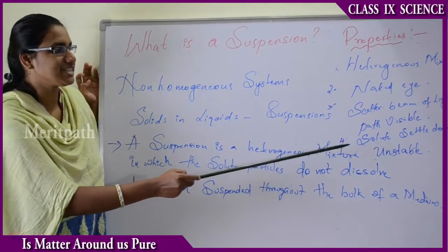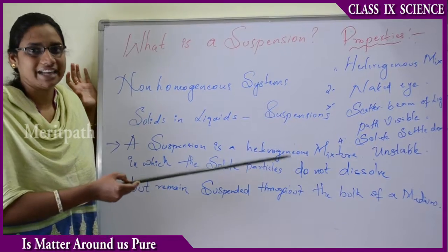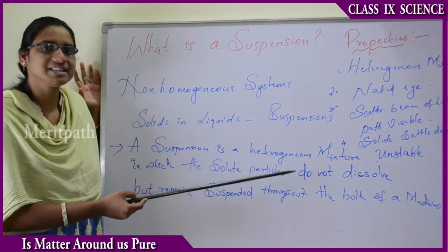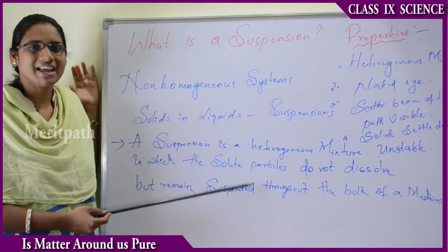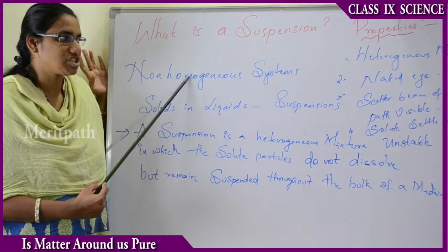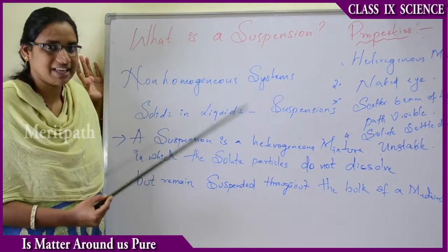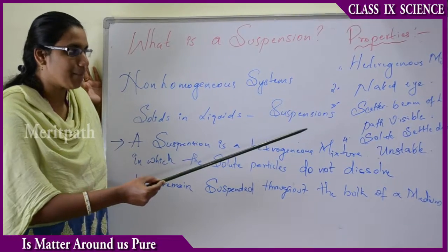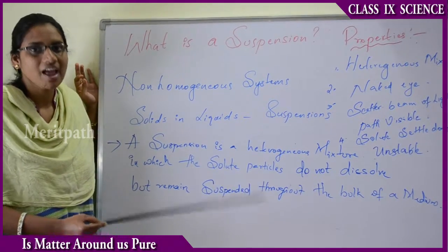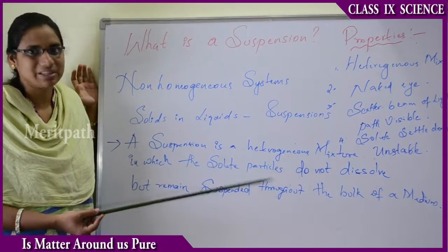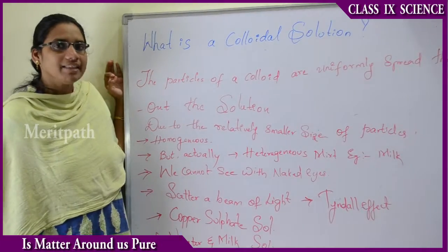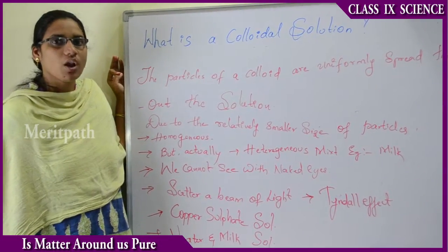The fourth property is that the solute settles down because it is in an undissolved state. Therefore, suspension is known as an unstable solution, whereas a homogeneous solution is known as a stable solution. The four properties of suspension are: it is a heterogeneous mixture; particles are visible to the naked eye; the path of light is visible; and solute particles settle down, making it an unstable solution. In addition to homogeneous and heterogeneous solutions, there is one more type known as colloidal solution.